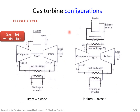Another configuration is the closed cycle: after expanding in the turbine, gas is rerouted through a heat exchanger where its temperature is still high and needs to be cooled back to inlet conditions of the compressor — using cooling air or water. For the indirect closed cycle, a heat exchanger is involved where a reactor or heat source provides the heat energy, and the fluid is rerouted back to the compressor.